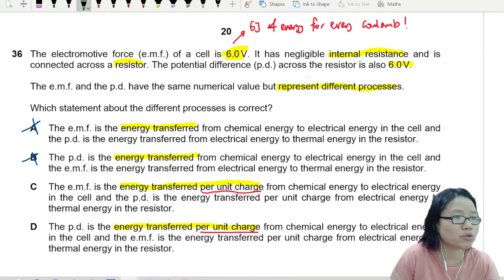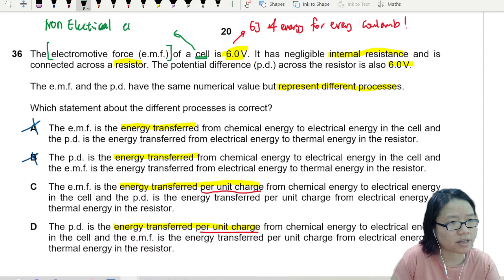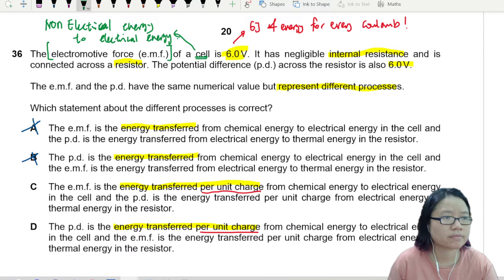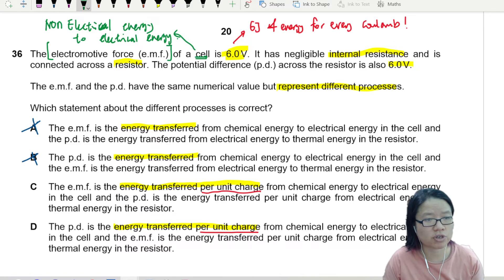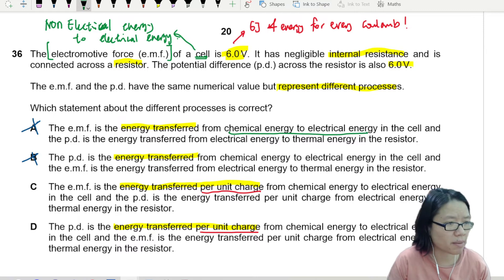So that's why it's energy per unit charge. And then when it comes to EMF, this one is the battery, right? It's a cell. So whenever it's a cell, you are converting non-electrical energy to electrical energy. Okay, non-electrical to electrical. So if it's non-electrical to electrical, you are talking chemical to electrical. This is your EMF.